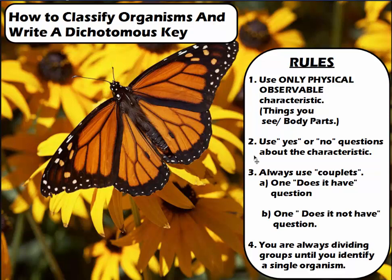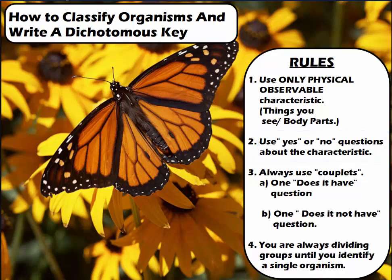Second of all, when you sort these creatures out, the best way to organize it is to use a series of yes or no questions about the characteristics. So you want to ask: does the creature have wings? Does the creature have spots? Does the creature not have fur? Things like that. Next, when we write up a tool called a dichotomous key, we want to use a series of statements in pairs, which we call couplets.